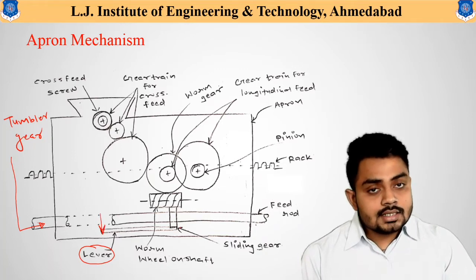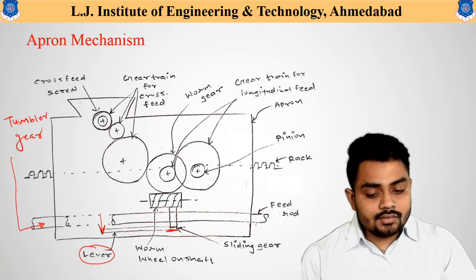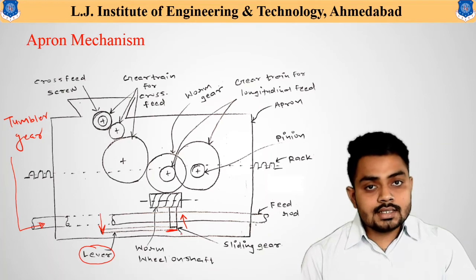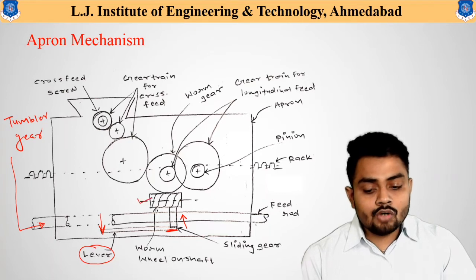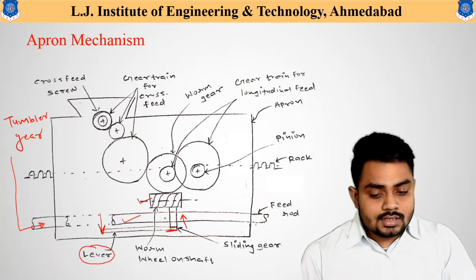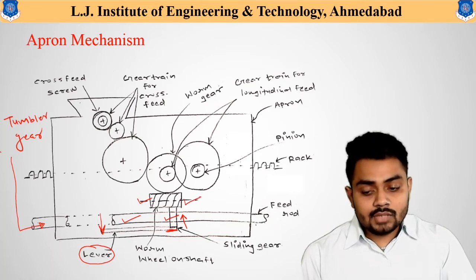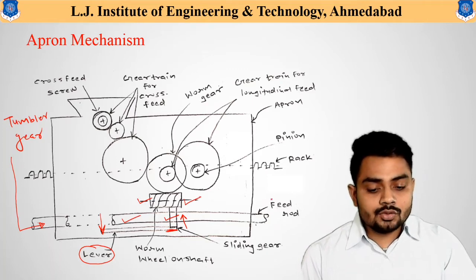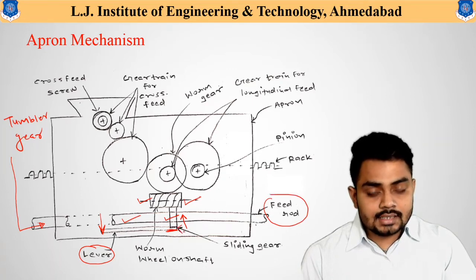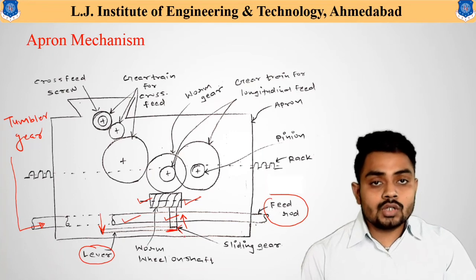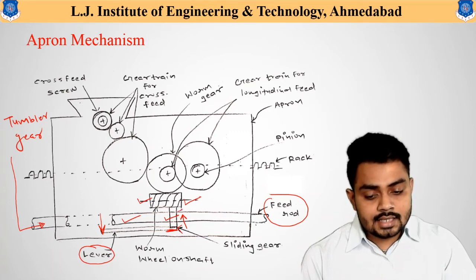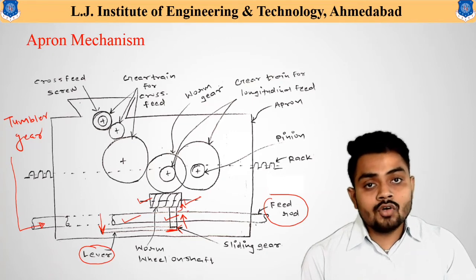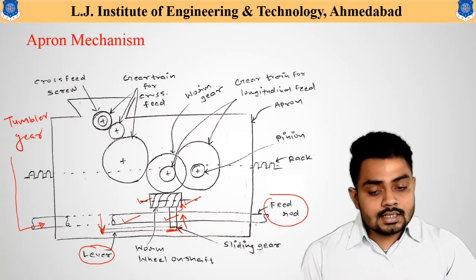When the lever is pressed downward, the end of the lever pushes the sliding gear upward. As the sliding gear moves upward along the feed rod, it connects directly with the worm wheel. There is now a power connection between the feed rod, the sliding gear, and the worm wheel. Since the feed rod rotates automatically from the tumbler gear, the sliding gear attached to it also rotates about the feed rod axis.